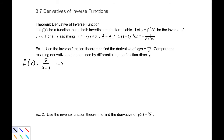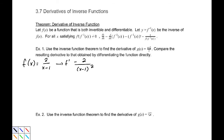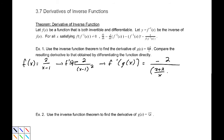Now I'm going to take the derivative of that inverse, using the power rule. The derivative f prime of x is negative 2 over (x−1) squared. This means that f prime of g(x) is equal to negative 2 over (x+2)/x minus 1, all squared, which simplifies to negative x squared over 2.